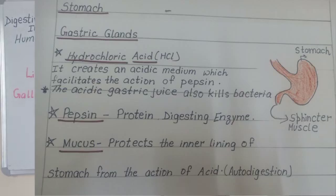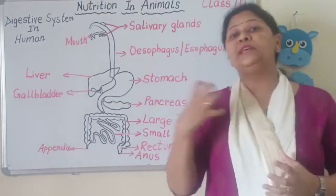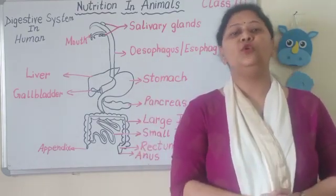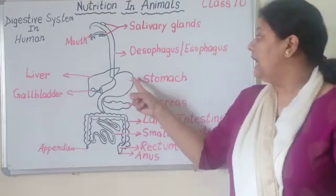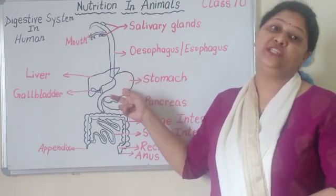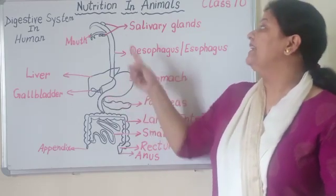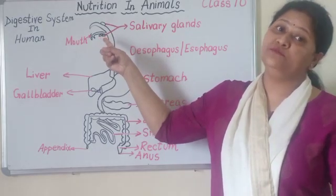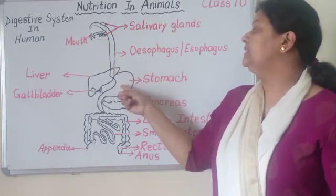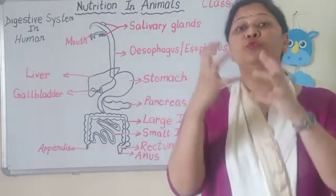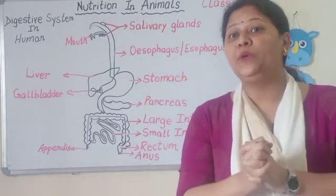Jo inner lining hai stomach ka, usko wo protect karta hai acid se — acid se bachane ke liye mucus secrete hota hai, jo inner lining of stomach ko protect karta hai. So protein ka digestion shuru hota hai stomach mein. We have already seen carbohydrate digestion starts in the mouth, then protein digestion starts in the stomach.